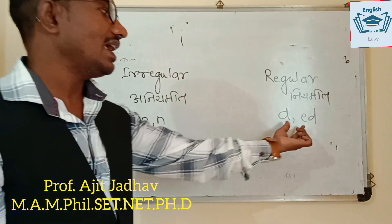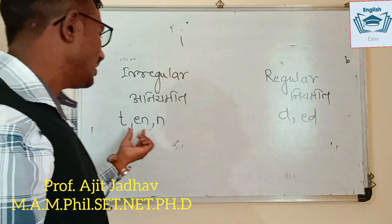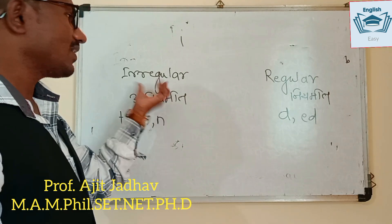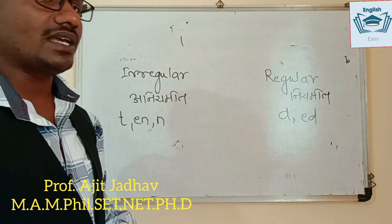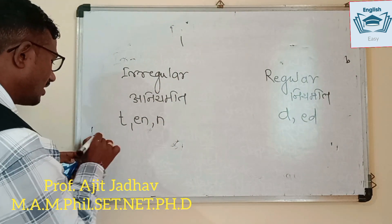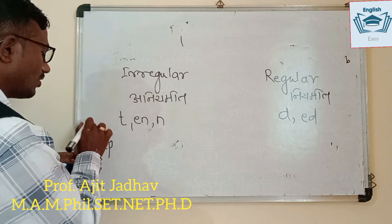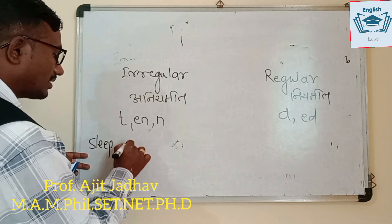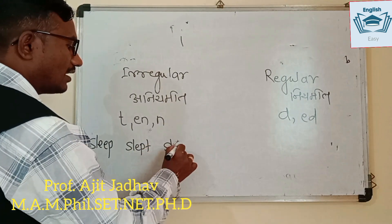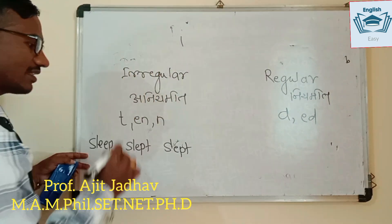When you read this, DEN is the regular word and DEN is the irregular word. This is the main example. For example, the verb SLEEP — first form is sleep, second form is slept.